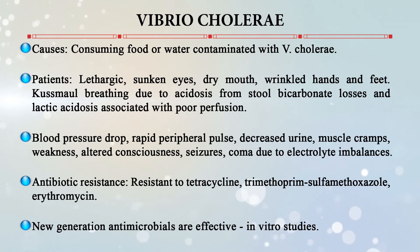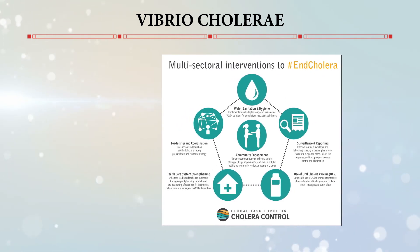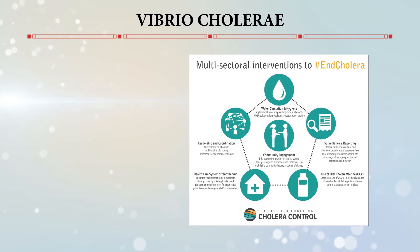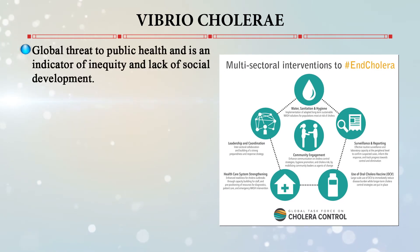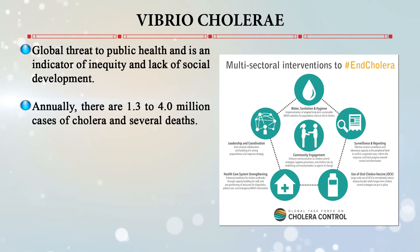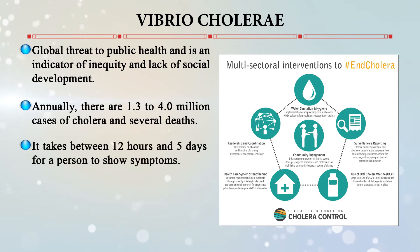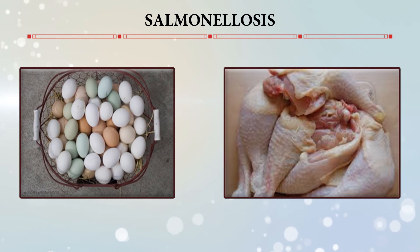New generation antimicrobials are effective and still in in vitro studies. For cholera control, multi-sectoral interventions in association with the United Nations and World Health Organization have been developed. Cholera is a global public health threat and an indication of inequity, lack of social development, and poor environmental quality. Annually there are 1.3 to 4 million cases of cholera. It takes 12 hours to 5 days for a person to show symptoms. It is preventable and can be eliminated by ensuring access to clean water, sanitation facilities, and good hygiene practices.